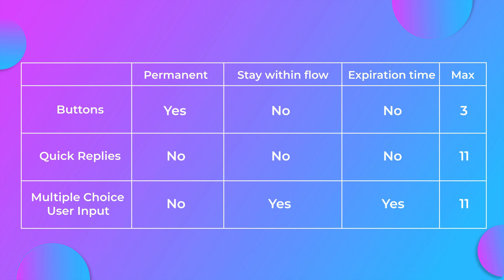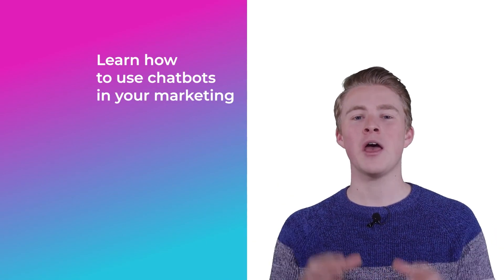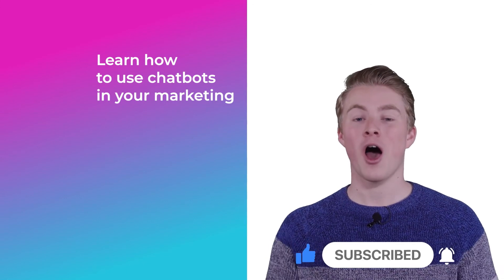So the last question is: when should you use which button? My general rule is: if you want the user to stay in the flow, use the multiple choice user input. If you don't need them to stay in the flow, or it's not a problem if they switch, I recommend using buttons. I actually only use quick replies as a backup for buttons — since buttons are limited to three, when I want to show five options, I use the three most important as buttons and the two less important as quick replies. Well, this was my video about buttons in ManyChat. If you have questions, please leave a comment below. If you want more videos on using chatbots in your marketing, please subscribe to my channel and click the like button.